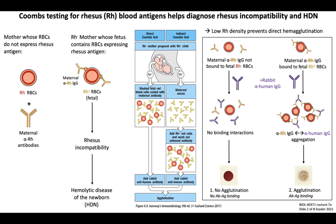Rhesus incompatibility is diagnosed using a Coombs test, which can come in direct or indirect forms depending on whether you sample fetal or maternal blood. In either case, a sample containing both fetal red blood cells and maternal serum is mixed together so any maternal anti-rhesus antibodies can bind to rhesus-positive fetal RBCs. However, because rhesus protein is expressed at a lower density on the red blood cell surface, it will not induce hemagglutination solely with anti-rhesus antibody binding. So samples are incubated with another antibody that recognizes the Fc region of human IgG — shown here in purple — such as rabbit anti-human IgG. This allows RBC aggregation to occur if fetal RBCs are coated in maternal anti-rhesus antibodies, giving an experimental readout of agglutination visible to the eye, enabling earlier therapeutic interventions to avoid more serious forms of HDN.